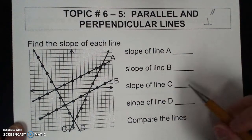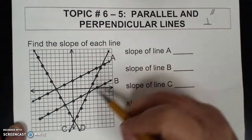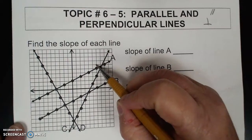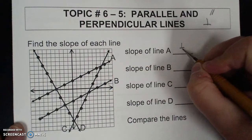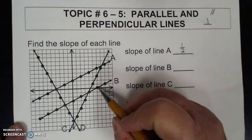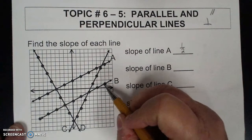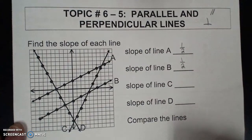First it says find the slope of each line. Find the slope of A: rise 1, run 2, so the slope is 1 half. Find the slope of B: rise 1, run 2, so the slope is also 1 half.